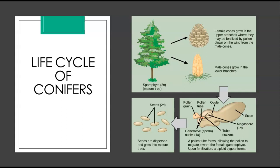Let's look at the life cycle of conifers. Pine trees are conifers, and they carry both male and female sporophylls on the same plant. Like all gymnosperms, pines are heterosporous, producing male microspores and female megaspores. In the male cones, also called staminate cones, microsporocytes give rise to microspores by meiosis. The microspores then develop into pollen grains. Each pollen grain contains two cells: one generative cell that will divide into two sperm, and a second cell that will become a pollen tube.